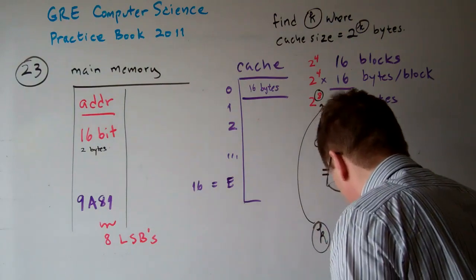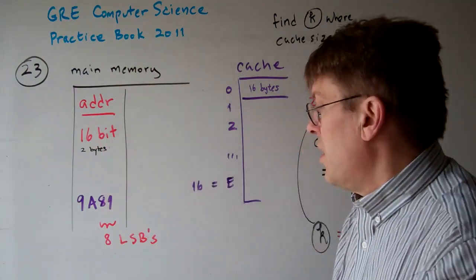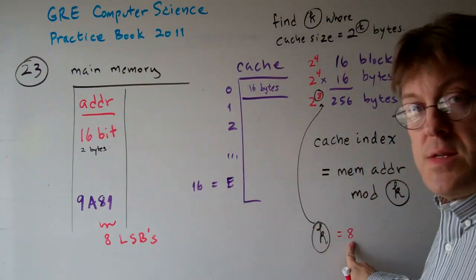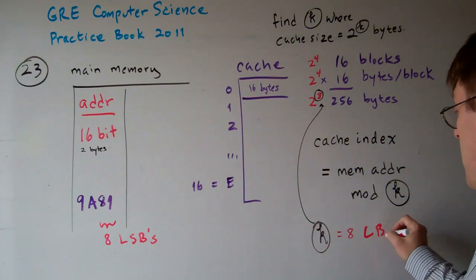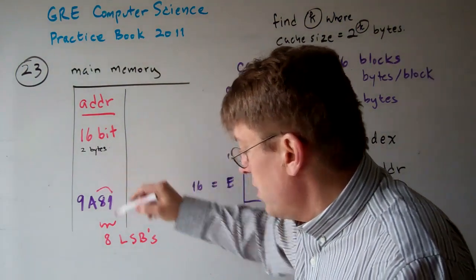That's going to be, since we know that the main memory address is 16 bits, and we've got the 8 least significant bits, it's going to be 8.1, it's going to be where it would go.